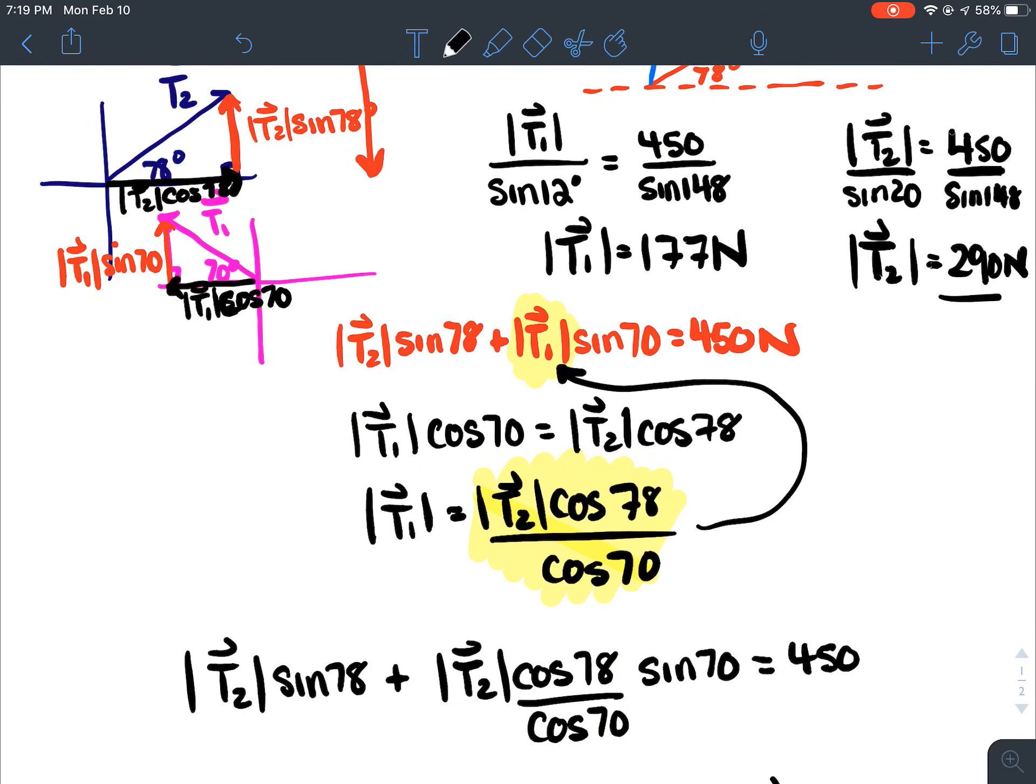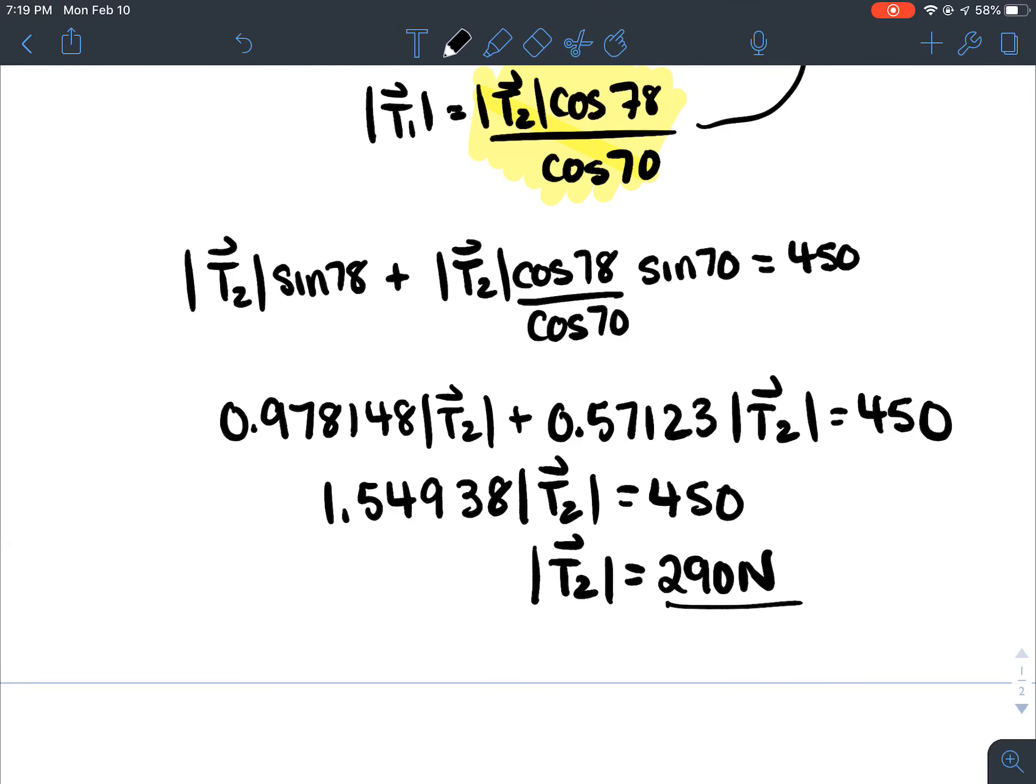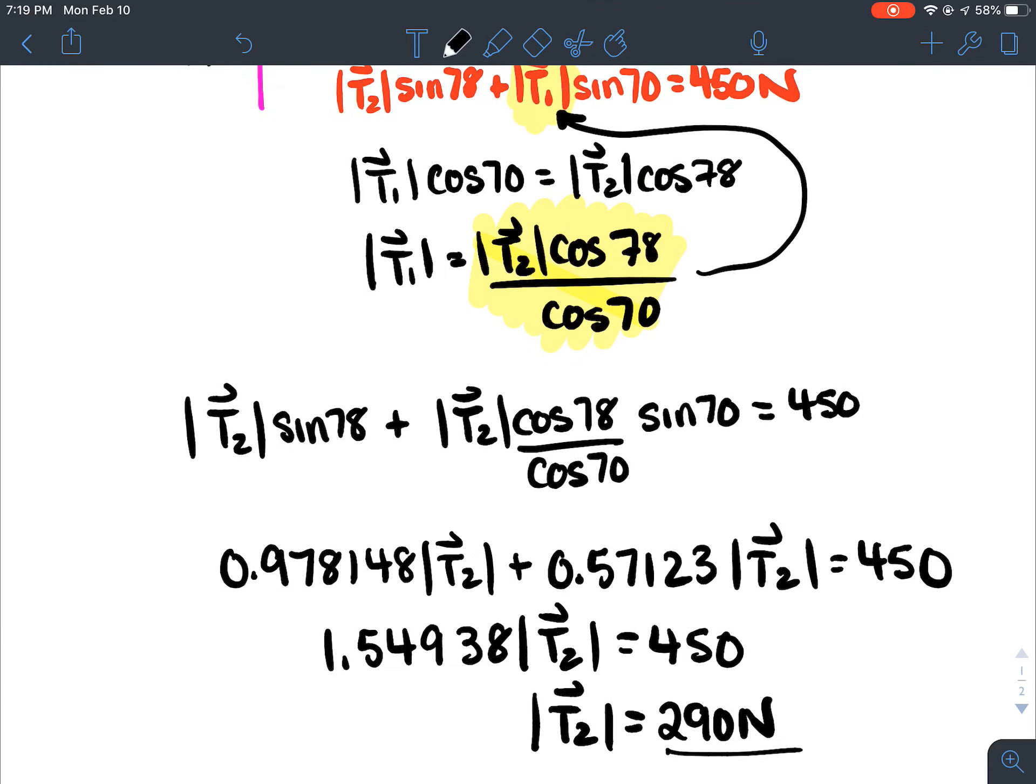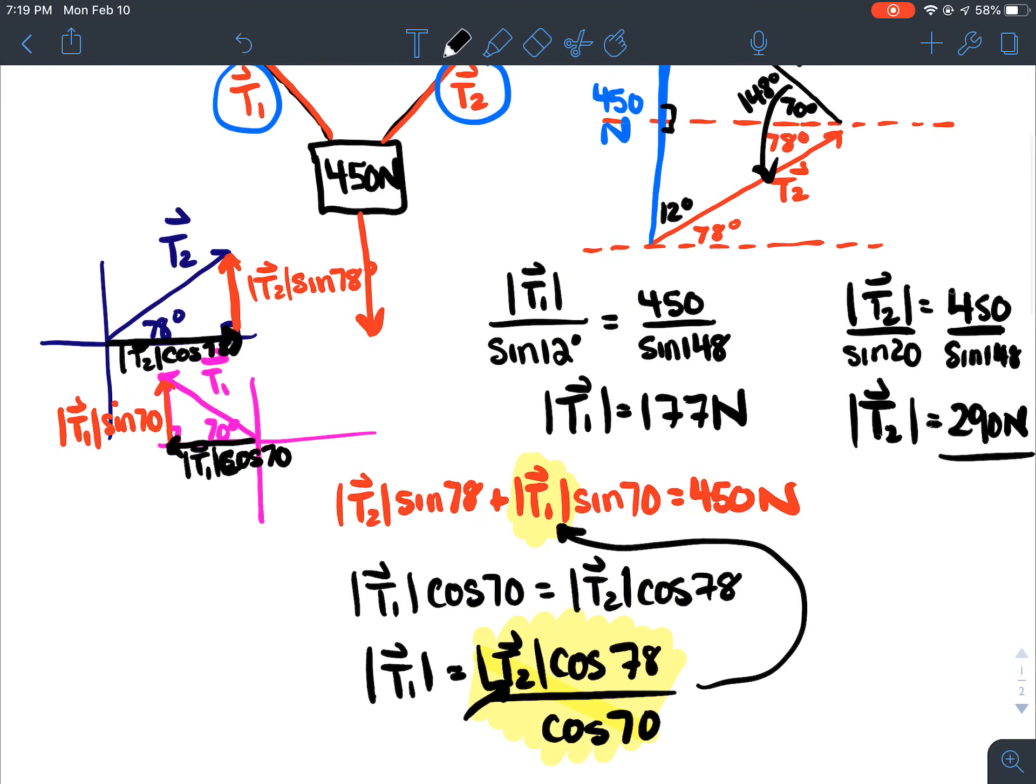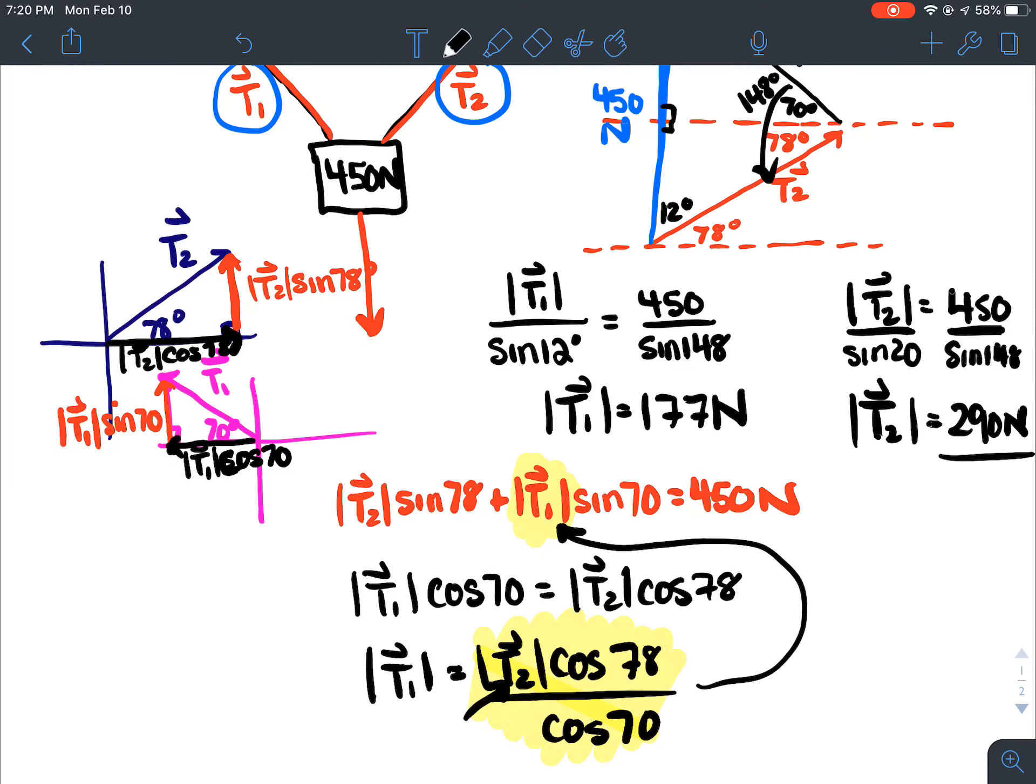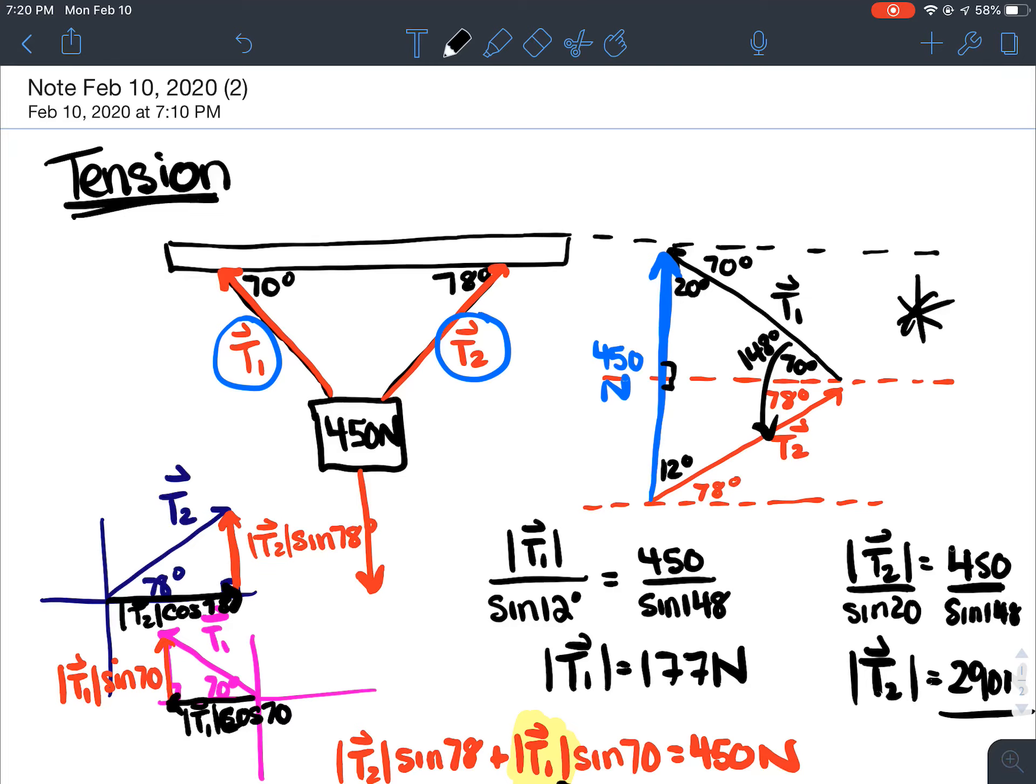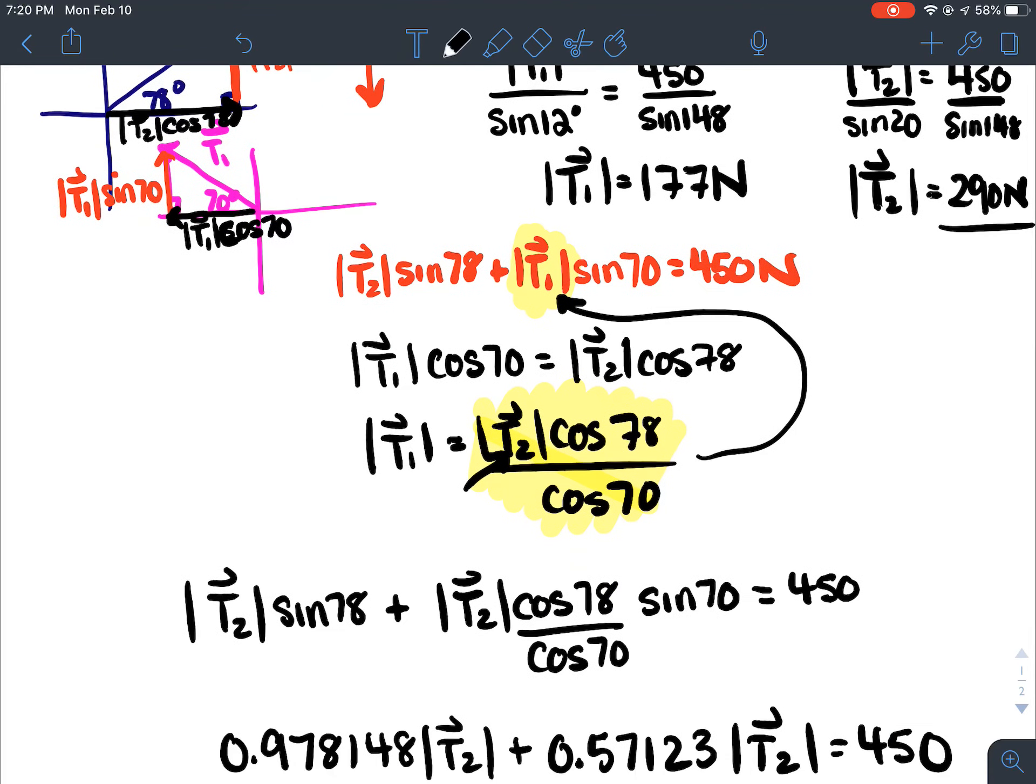Sweet, I actually got the same answer. And then you could sub that 290 back in like for here to figure out T1. So, it is possible to do it using components, but I personally think it's way easier to just set up your triangle and use sine law. But I also think that this question's attention is a little bit unfair to people that haven't taken physics. But I did want to make a video in case you were interested in going kind of step by step and really slowly.